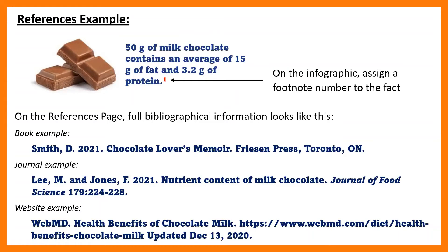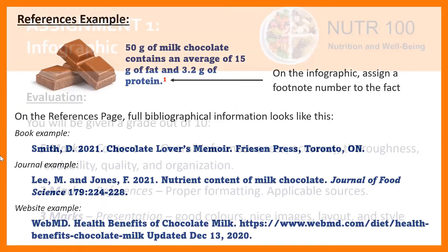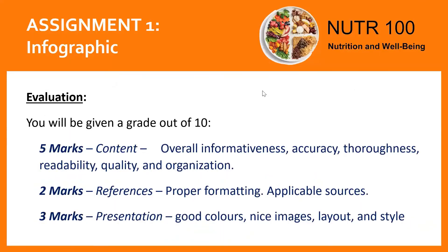Hopefully that's pretty straightforward — this is kind of standard stuff. I'm not looking for an exact format, but that the information is complete and neat and tidy. This is how the evaluation is going to work: it's 10 marks, which is 10% of your grade. Five marks is for your content — that you have good, reliable, readable information. Two marks for your referencing — mostly for proper formatting, but also that your sources are good.